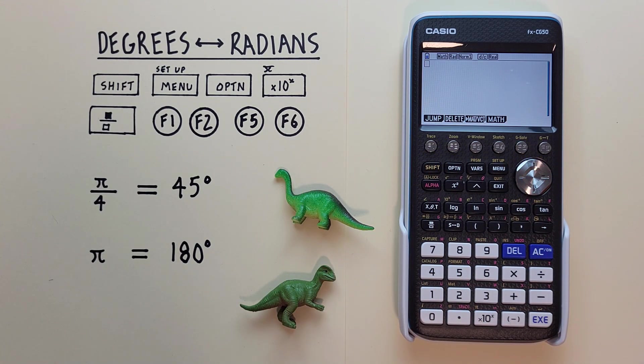Let's say we were given radians and want to convert to degrees. For example, we have Pi over 4 and want to convert that to degrees.